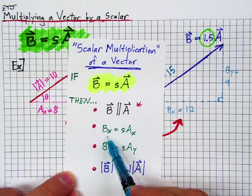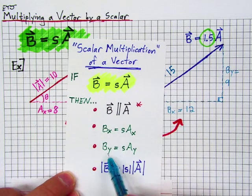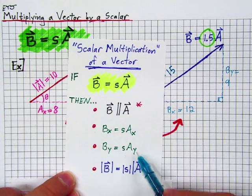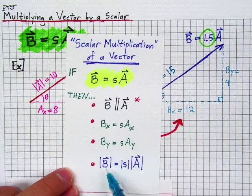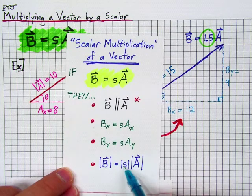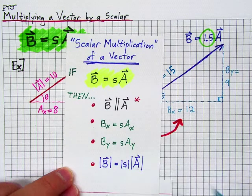The x component of b will be s times the x component of a. The y component of b will be s times the y component of a. And then the magnitude of b will be the absolute value of s times the magnitude of a.